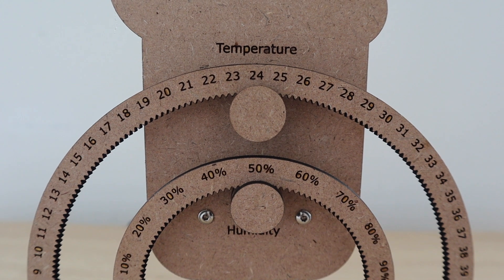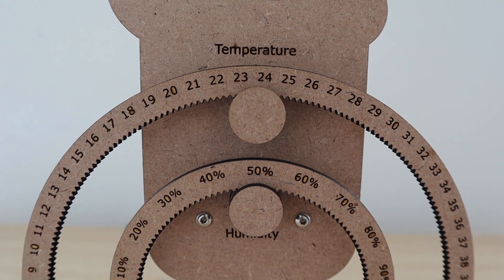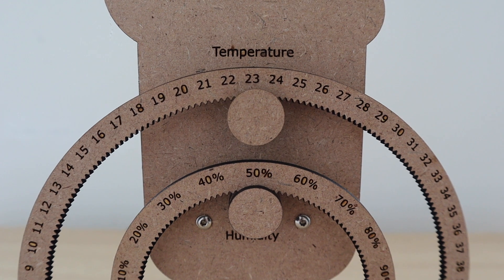The DHT sensor has a range of 20 to 95% relative humidity and can measure temperatures between 0 and 50 degrees Celsius.